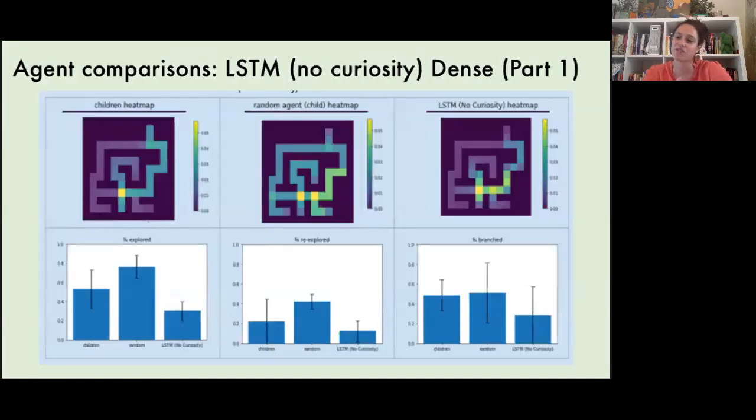Here we can see a summary of the children, random agent, and RL agent trajectories for part one in the dense rewards condition. The bar charts show percentage of the maze explored, percentage of the maze re-explored or visited more than once, and percent branched. Percent branched measures the amount of times that the child or agent takes a branch at a junction versus continuing to go straight. In general, we find that the random agent explored more of the maze than the children and the RL agent, and this makes sense because the random agent is blind to the reward structure. On the other hand, the paths of the children and RL agent are more biased to where the apples are in the maze, and we can see this in the corresponding heat maps. Meanwhile, the heat maps for the random agent show exploration that is more dispersed across the entire maze. Qualitatively, we can see that children's trajectories in this condition look more like the RL agent than a random agent.